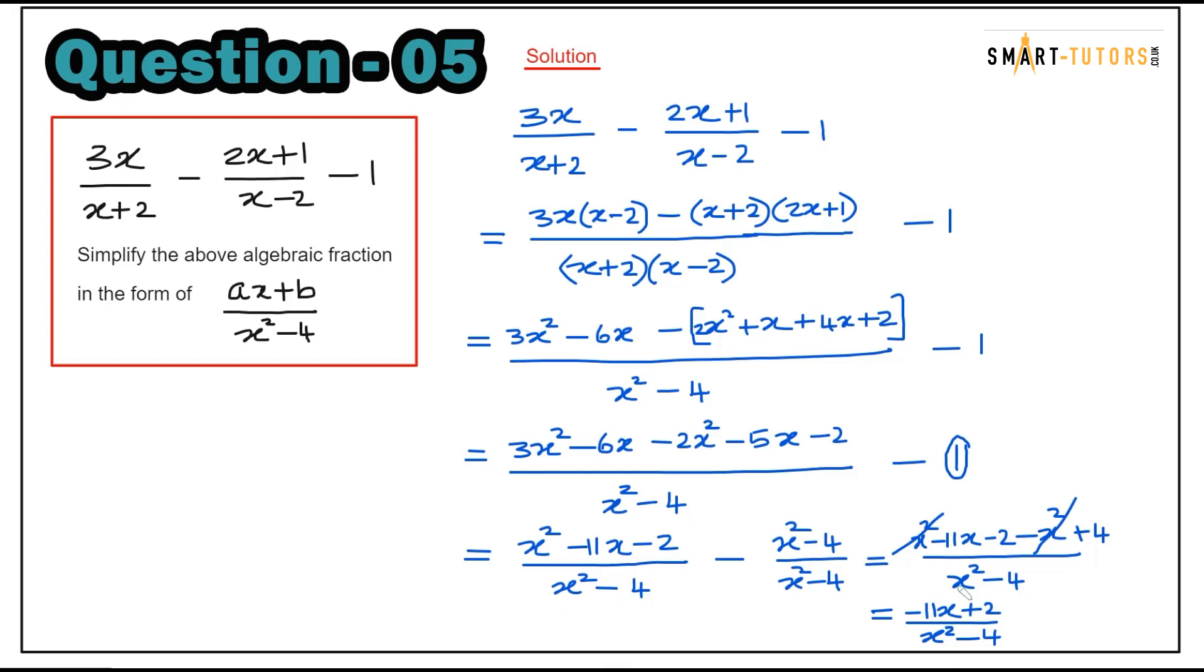The 1 can be written as x squared minus 4 over x squared minus 4. Both denominators are the same, so put all numerators together: x squared minus 11x minus 2 minus x squared plus 4. X squared cancels, leaving negative 11x as the answer. Negative 2 plus 4 is plus 2. That is the final answer.